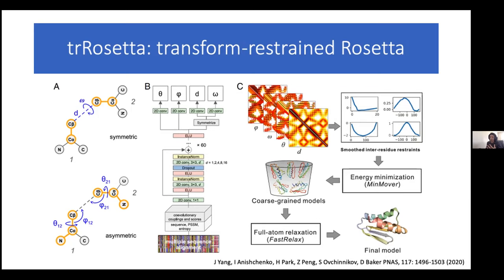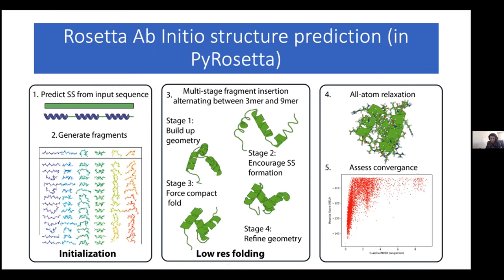Because of that, I also developed a pipeline using more conventional methods. Here we use predictions of secondary structure to generate fragments from known structures that are three to nine amino acids long — the hypothesis being that local sequence determines local structure. We can use these fragments as an initialization of the fold of the backbone, and then combined with differential sets of score functions, we can slowly build up a three-dimensional fold, and then finally refine this at the all-atom level and check that our low-scoring structures are converging onto the same fold as a check for convergence of the algorithm.